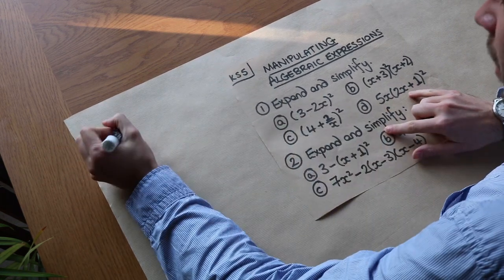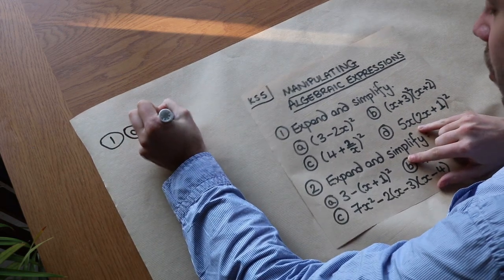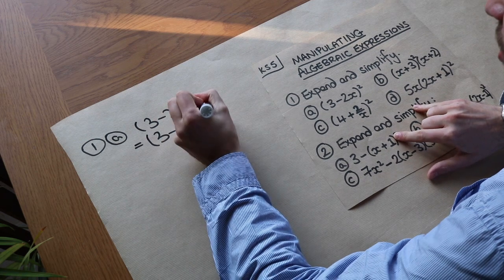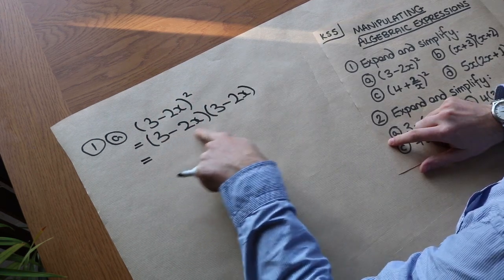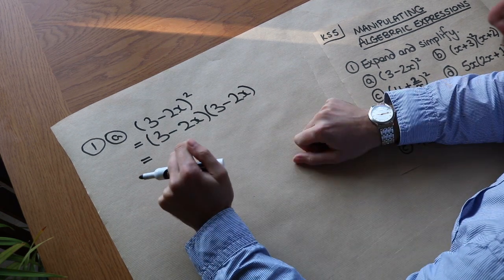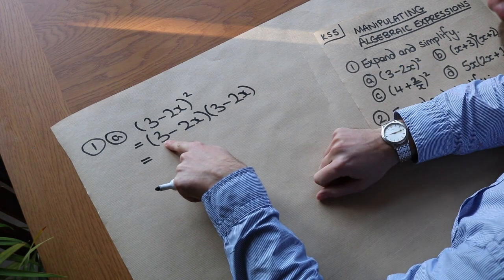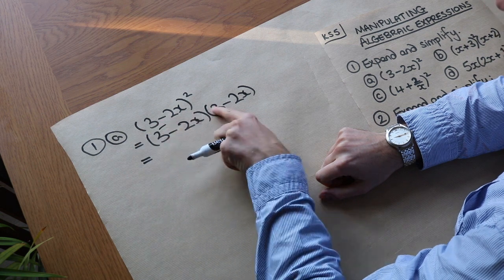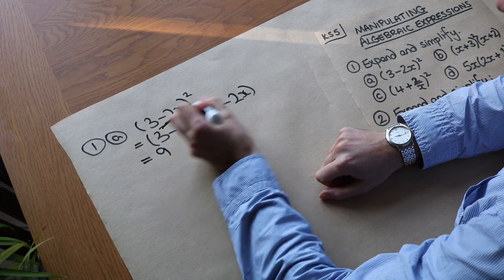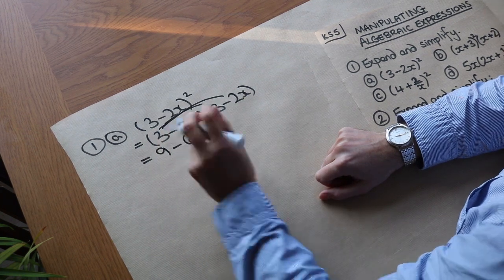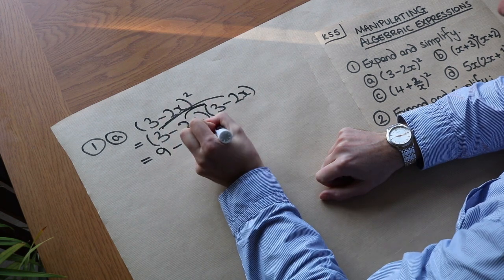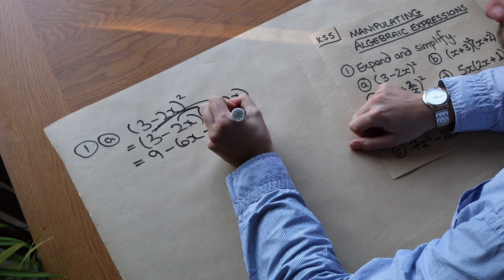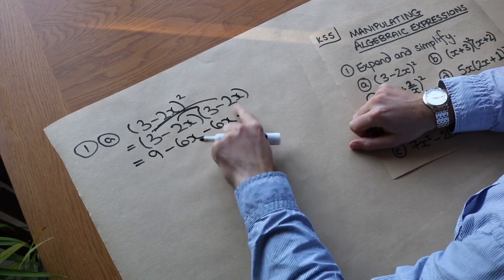We want to expand and simplify the following expressions. First we have (3 - 2x)². The easiest way is to write the bracket out twice: (3 - 2x)(3 - 2x). Remember we multiply each term in the first bracket by each term in the second bracket. So: 3 times 3 is 9, 3 times -2x is -6x, then -2x times 3 is -6x again, and -2x times -2x — notice negative times negative is positive, and 2 times 2 is 4, so that's 4x², not 2x².